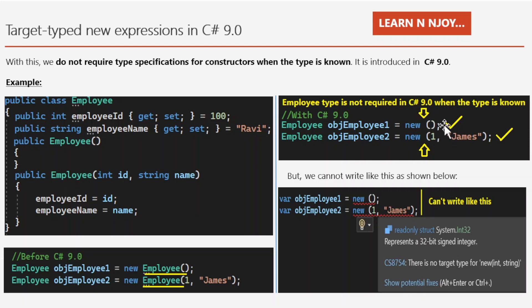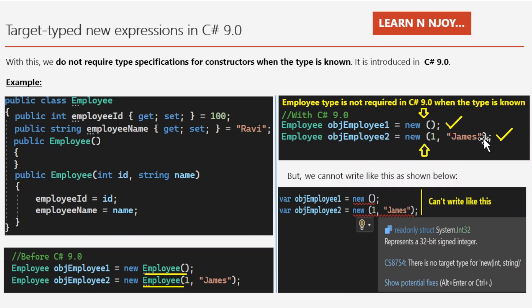Similarly, for the parameterized constructor: Imply objImply2 = new(1, "James"); — no type is specified on the right side. We just use the new keyword with the opening and closing parentheses, and provide the parameters in between.